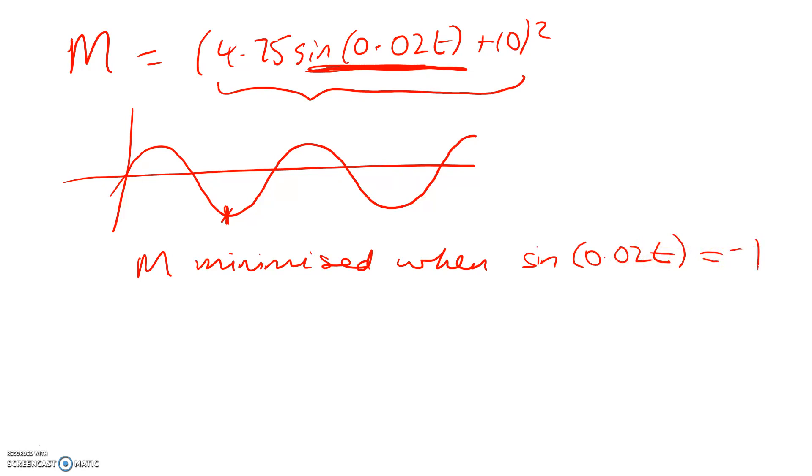But notice we weren't actually asked when that happens. Now you can go through and solve and figure out when that happens, but we don't have to. All we have to do is to say that the minimum value will be M is equal to [negative 4.75 plus 10] squared. Okay, so that gives me 5.25 squared. So the lowest possible number of microorganisms is going to be 27.5625. That's pretty silly because you can't have part of a microorganism. I suppose you can, but not in maths. So the minimum number of microorganisms that I would say would be 28.